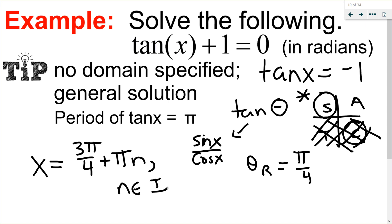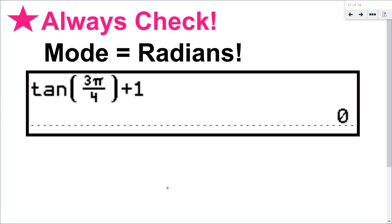That gives positive and negative rotations — clockwise and counterclockwise angles. For the check, make sure you're in radians: tan(3π/4) + 1 = 0, so I know I've done that right. I could also check 3π/4 + π to get into quadrant 4, and it would also work.